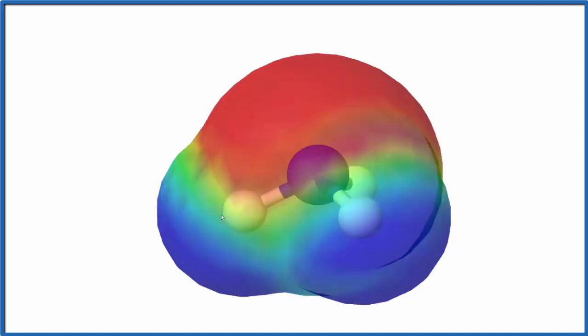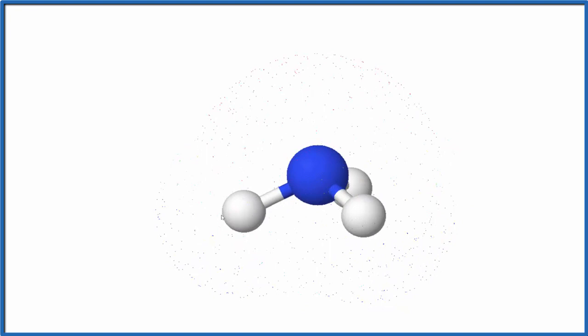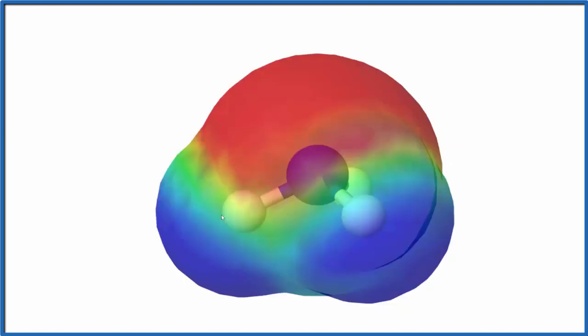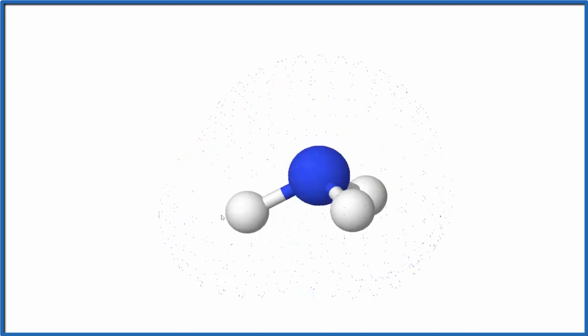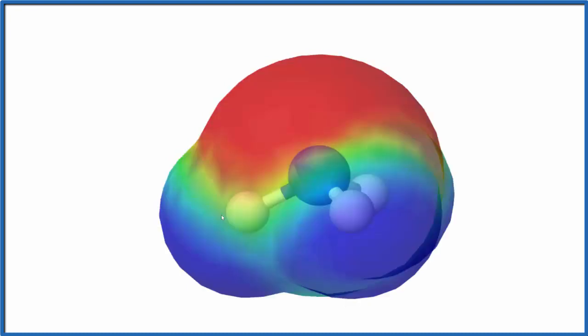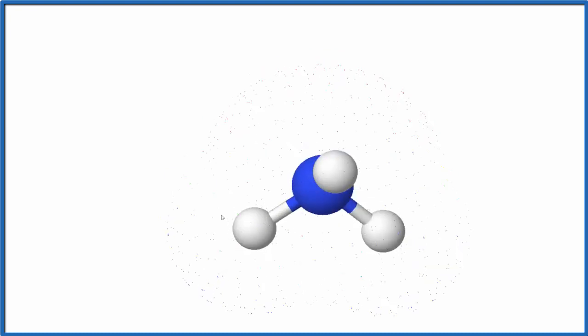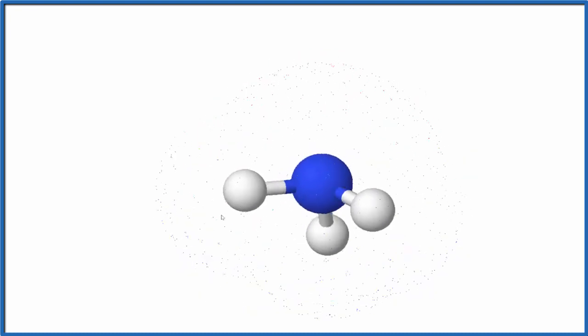And since we have that electronegative nitrogen atom and then the hydrogens, which are less electronegative, we end up with a negative side, that's the red, and a positive side of the molecule, that's the blue. So since NH3 is a polar molecule, we have poles, a positive and negative pole.